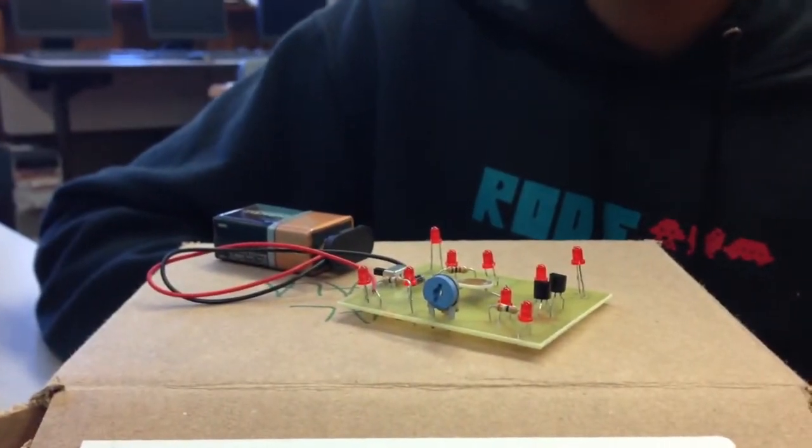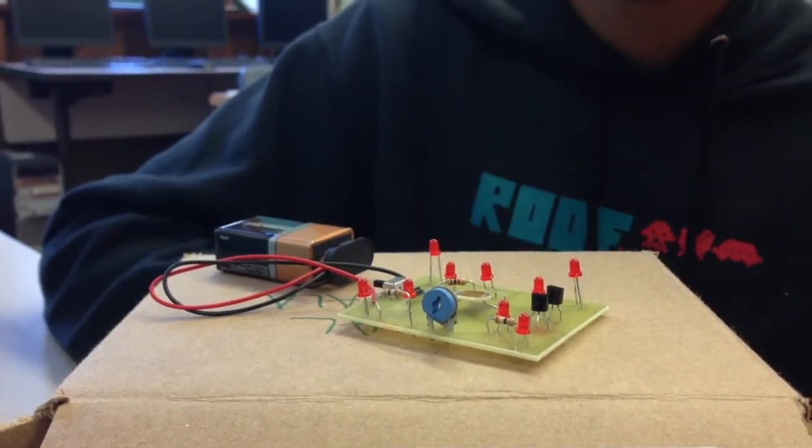My project is the laser target and what it does is it takes in light and gives off light in the form of these red LEDs. The light can be in the form of sunlight, electric light, or it works really well in a dark room where you can use a laser to shine on this CDS cell, which I'll describe later, and that makes everything shine up.